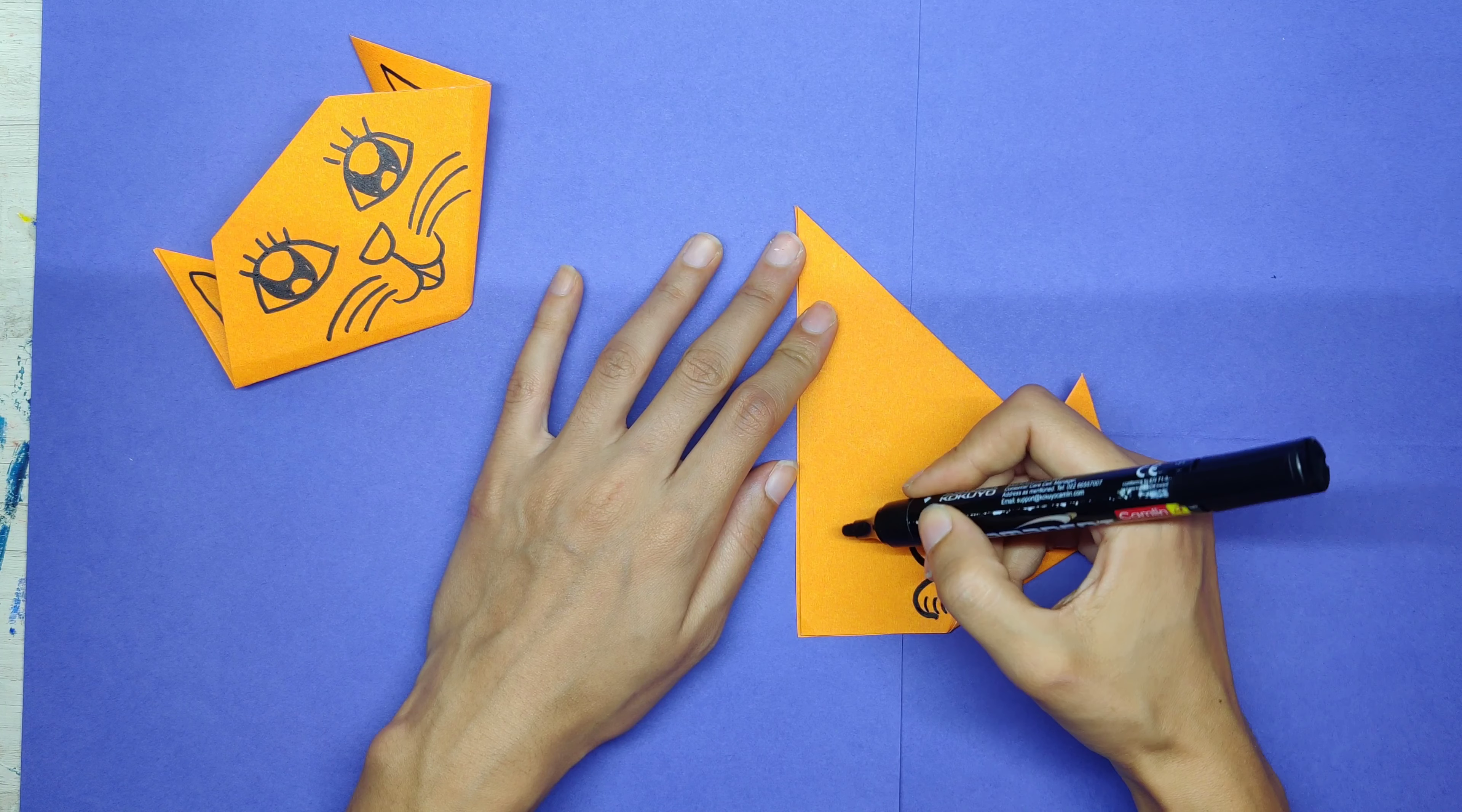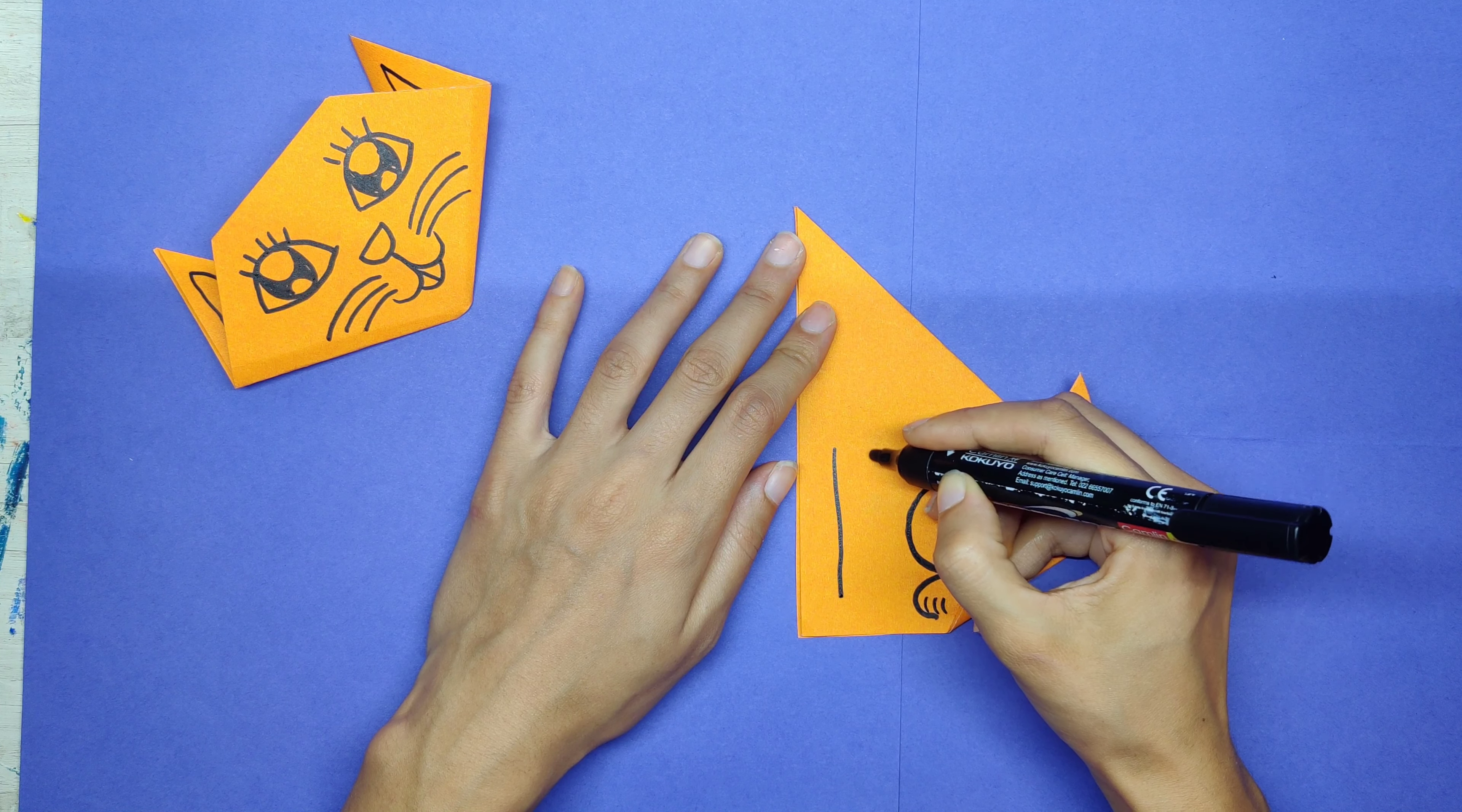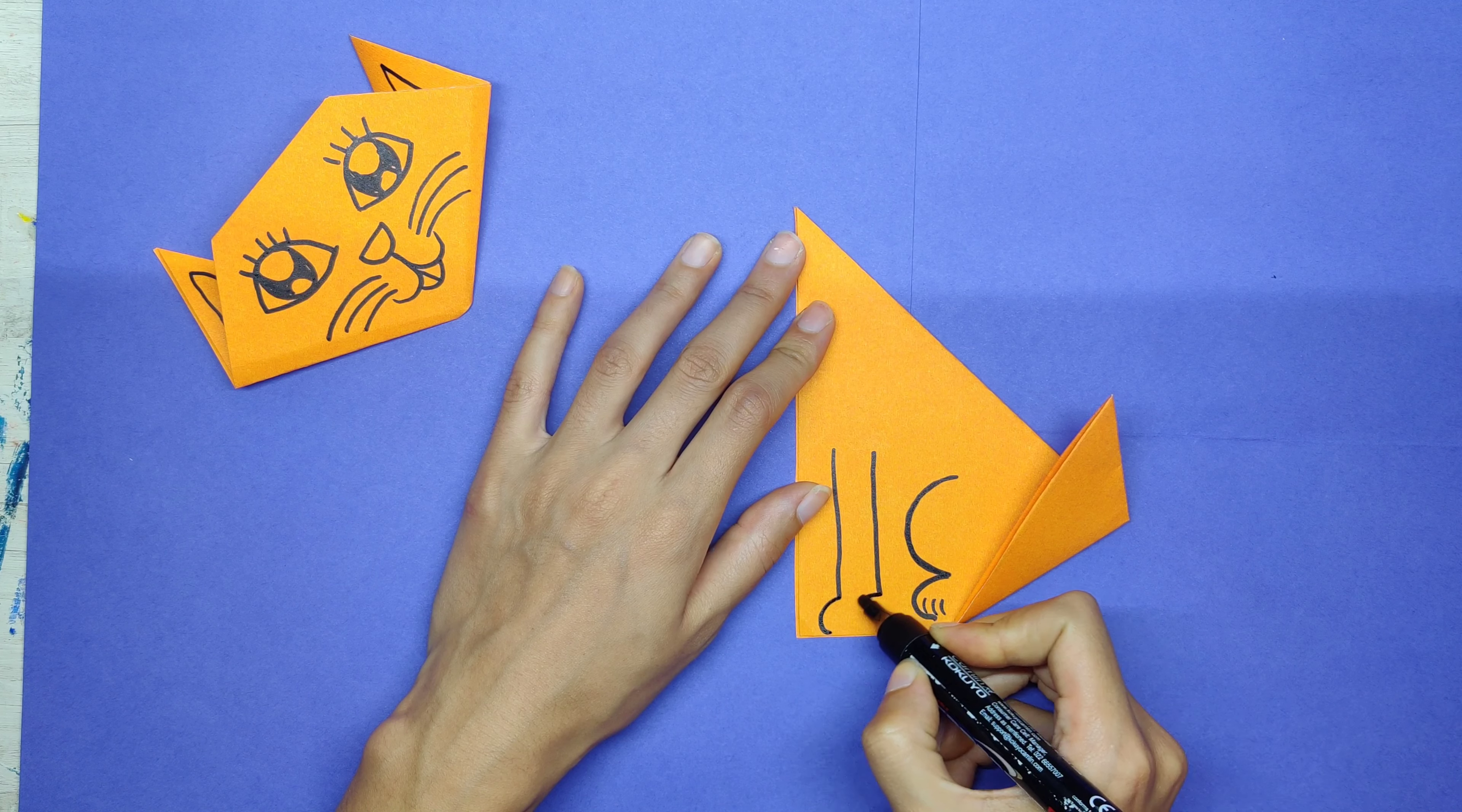And for the front legs, I'm going to draw two standing lines, vertical lines. One and two. And another baby C. Baby C.